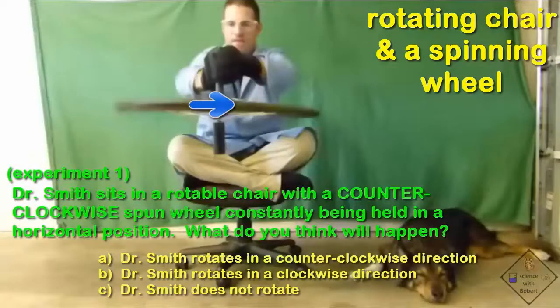Let's give Dr. Smith angular momentum at the beginning of his attempt, but not angular momentum generated by pushing off on something. Instead, let's give him a spinning wheel at the beginning of his attempt at traveling in a circle on his rotatable chair. By giving him a spinning wheel, he now has a chance to spin in a circle on his chair — he just has to know what to do with the spinning wheel.